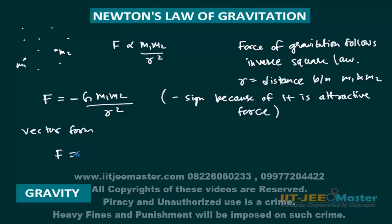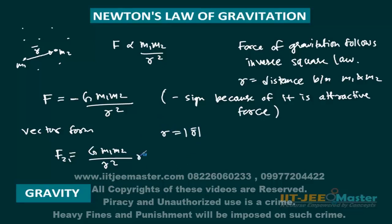In vector form, suppose two particles M1 and M2. We take the vector R from M1 to M2. The force F21, that is the force on M2 due to M1, is written as minus G M1 M2 upon R squared into R-hat. The negative sign means the force on M2 is in the opposite direction of R vector — that is, towards M1. The magnitude of the force is G M1 M2 upon R squared.